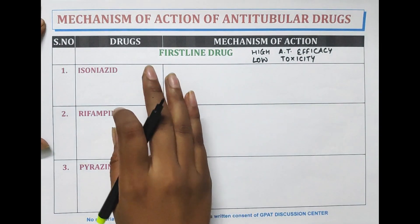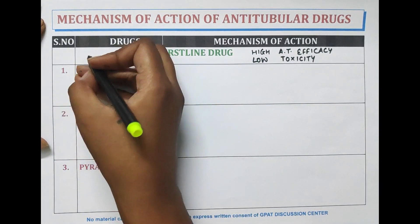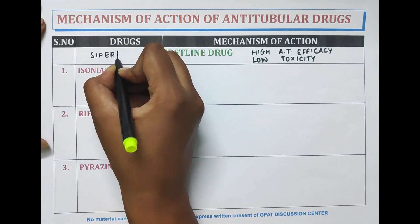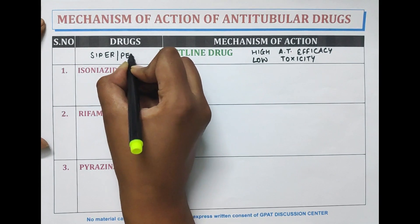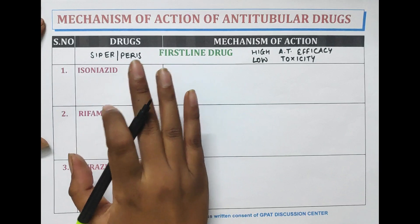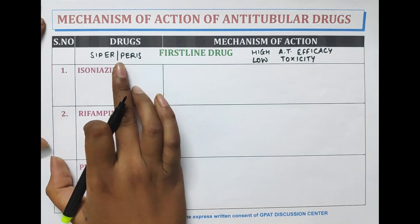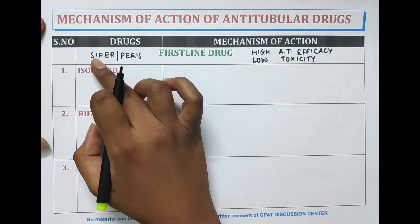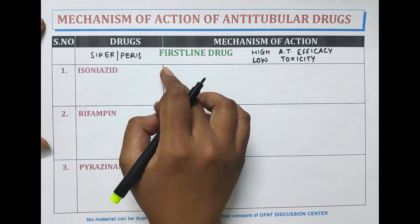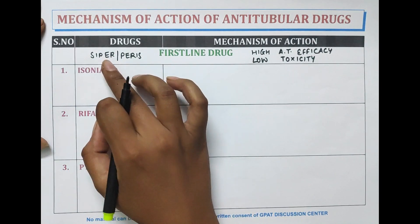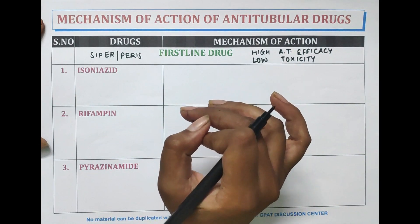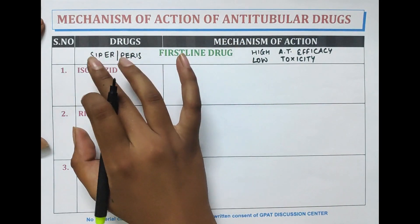The mnemonic to remember first line drugs is CYPR, or you could remember this as PERIS — a slight change from PARIS. S for streptomycin, I for isoniazid, P for pyrazinamide, E for ethambutol, and R for rifampicin. There are five drugs in the first line.